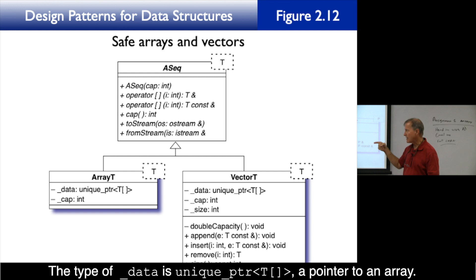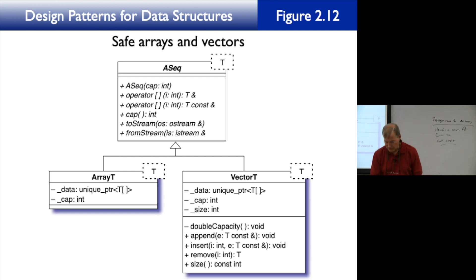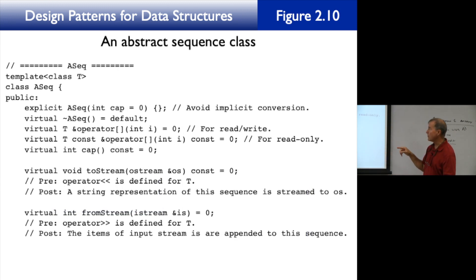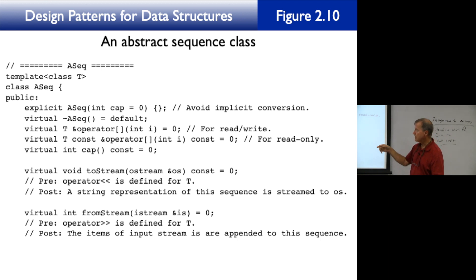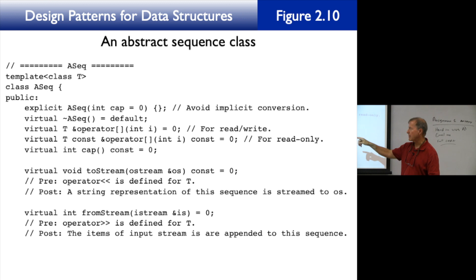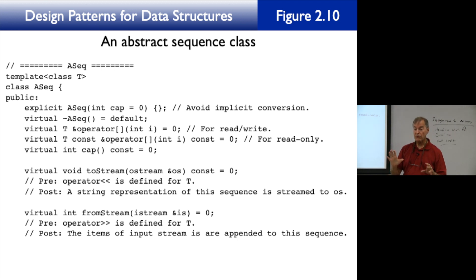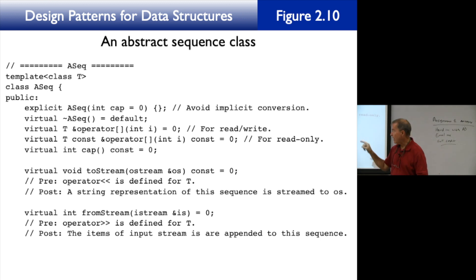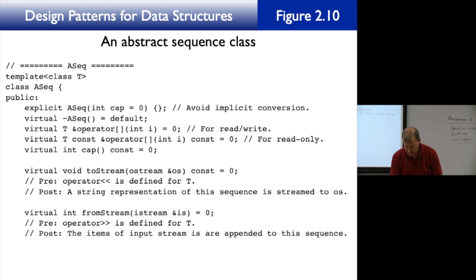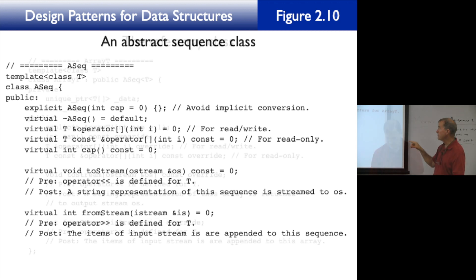Now let's do a code walkthrough in figure 2.12, which is the abstract sequence class for a safe array — the C++ code corresponding to the UML diagram we just saw. You've got operator[] overloading, a constructor, a destructor, and virtual int cap(). Virtual equals zero in C++ terminology is called pure virtual — abstract in UML terminology.